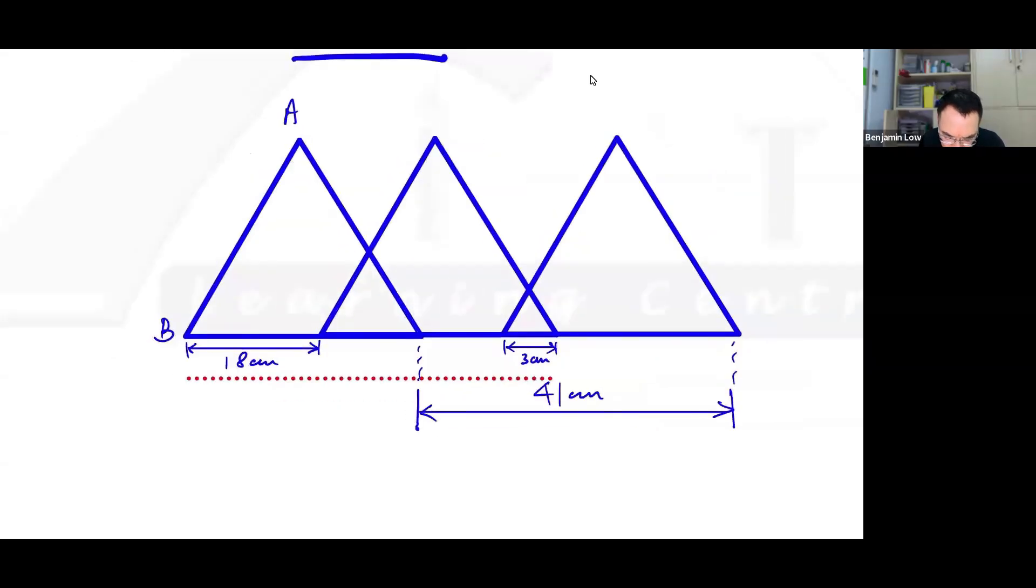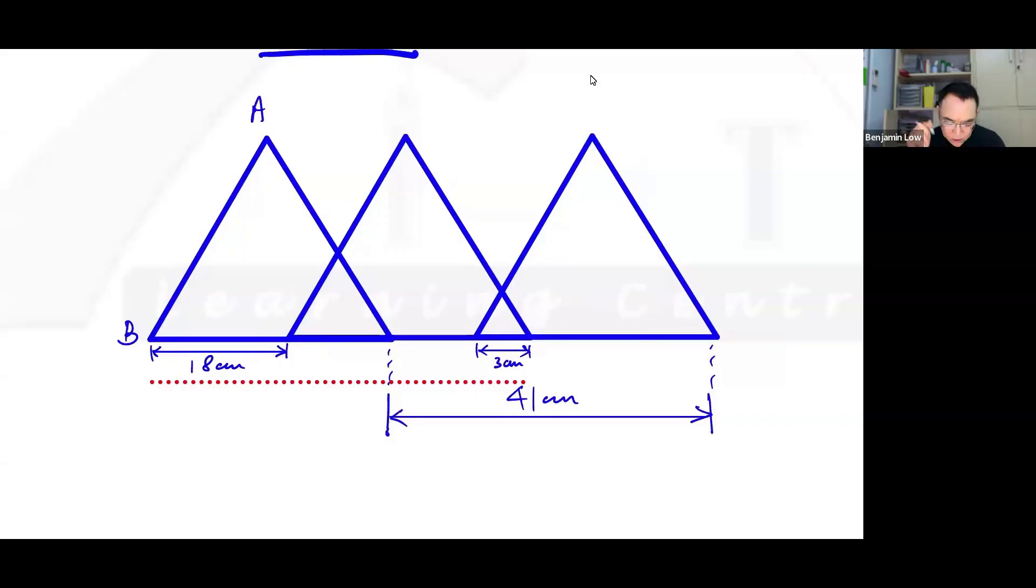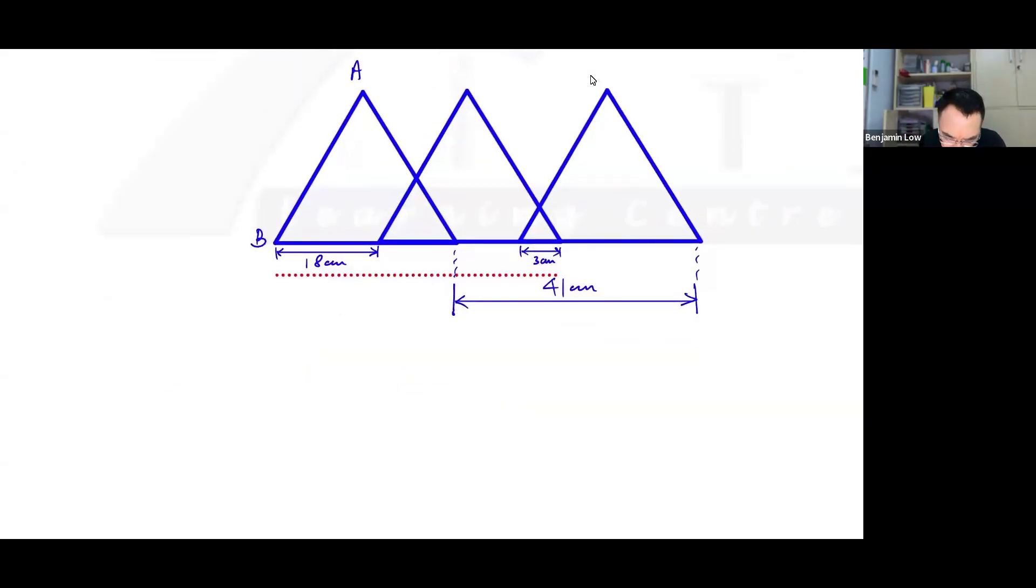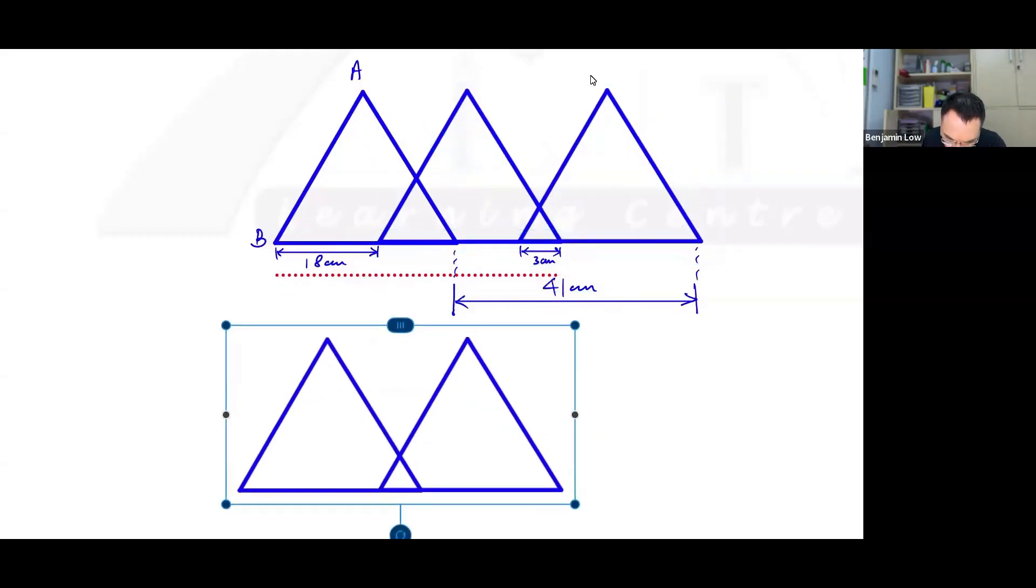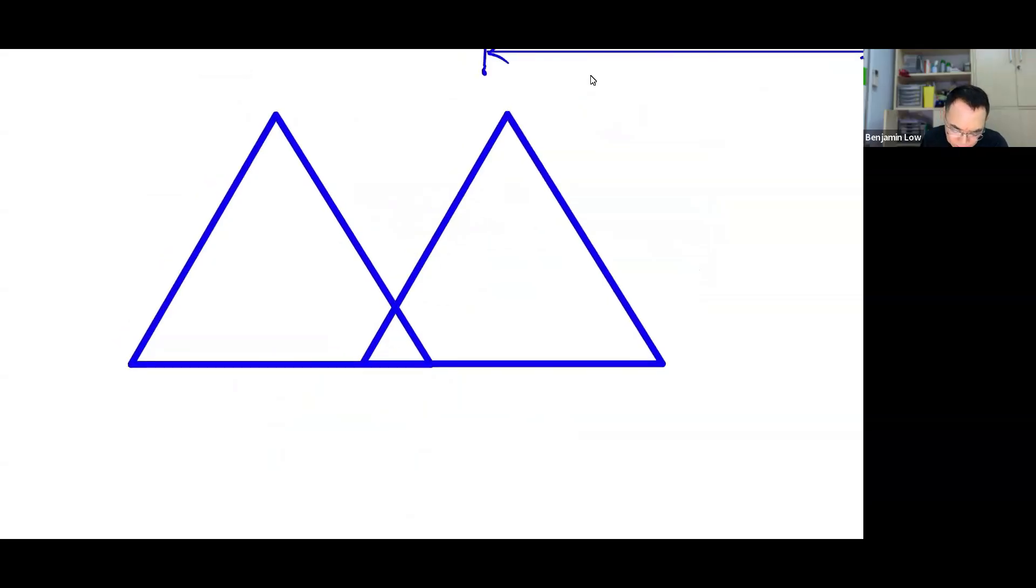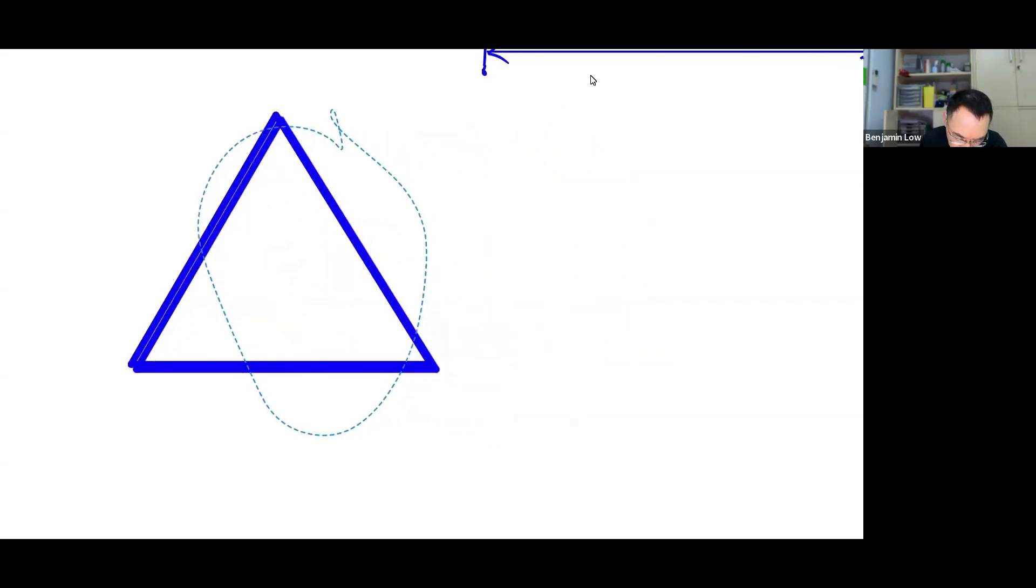So where do we begin? Well, the first thing we want to understand is that for diagrams, the movement of two equilateral triangles, perhaps I can illustrate this. Imagine these two equilateral triangles. If they are identical, then it means that I can overlap them directly. So right now, I should be able to overlap this directly.